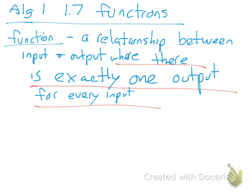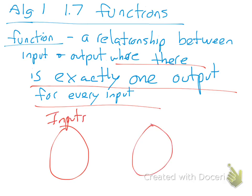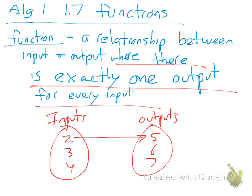What does this mean? I think it's easiest to show in a mapping. So if I have a mapping where we have inputs and outputs, and I have inputs of 2, 3, and 4, and we have outputs of 5, 6, and 7 — what it means is that there's exactly one output for every input. That means 2 only goes to a 5, or only goes to one number. 3 goes to one number, and 4 goes to one number. This is a function.